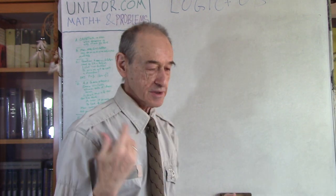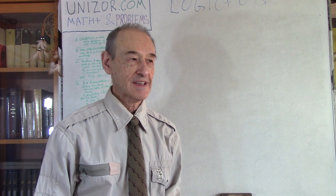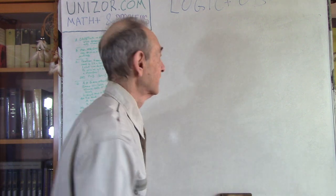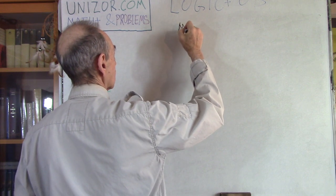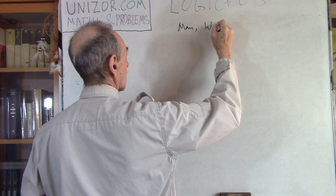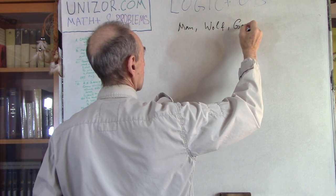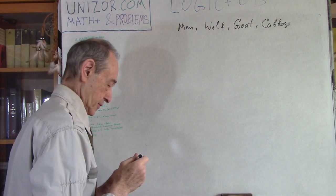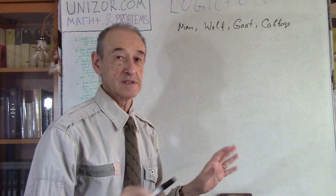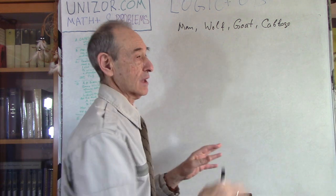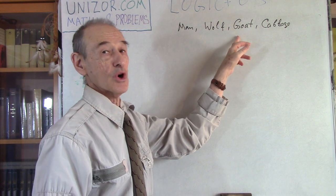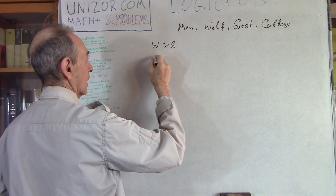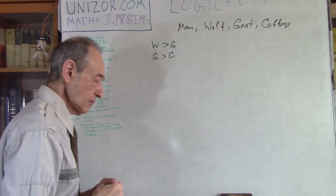The next problem is a very old one — somebody was asking me this when I was in school, about 60 years ago. We have a man, a wolf, a goat, and cabbage. In the presence of the man, nobody eats anything. But left alone, the wolf can eat the goat, and the goat can eat the cabbage. There is a river with two banks. All of them — man, wolf, goat, and cabbage — are on one side. There is a boat, but it can hold only the man and one of the others. He has to get everyone to the other side so that nobody eats anybody.